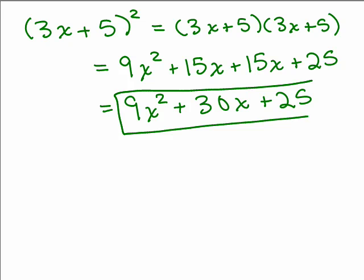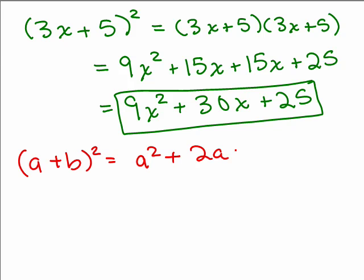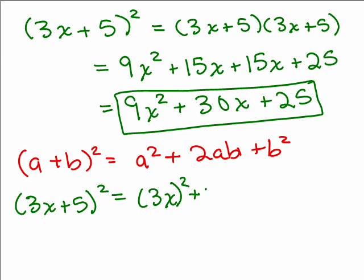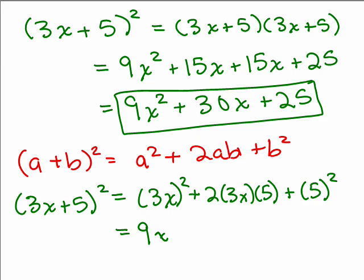I'm not using a formula — I'm just writing out the meaning of what happens when you square something. Now let's take the formula a plus b squared and apply it, putting in 3x and 5 for a and b. So I've got 3x squared plus 2 times 3x times 5 plus 5 squared. And if we did it that way, 3x squared is 9x squared, and 2 times 3x times 5 is 30x, plus 25.